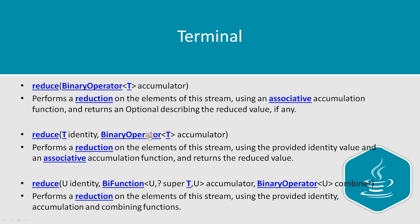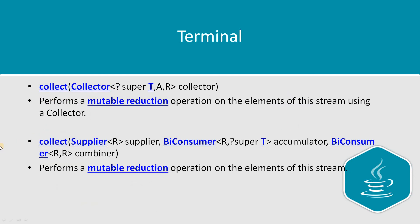The third variant of reduce takes an identity (initial value), a function for the partial result, and a combiner. This variant comes into picture when working with parallel streams — when you have multiple streams and want to combine their results into one. The basic idea of reduce is that it performs a reduction on the elements of the input stream.